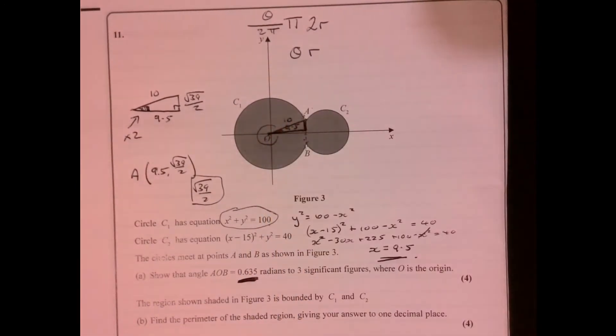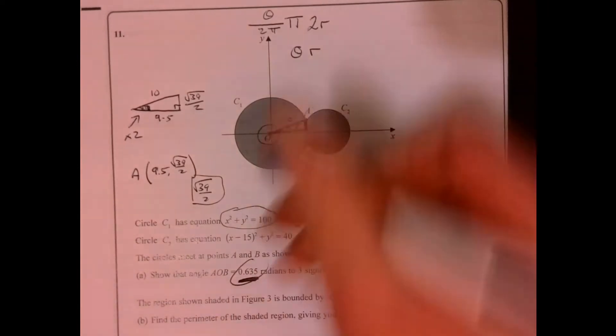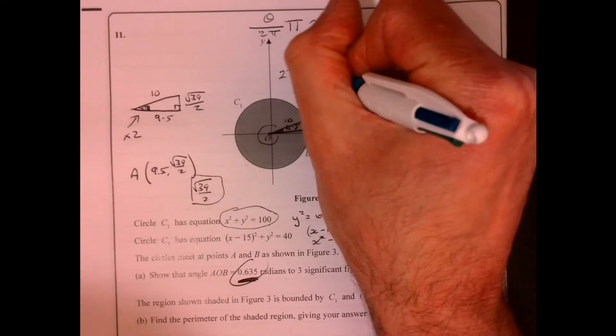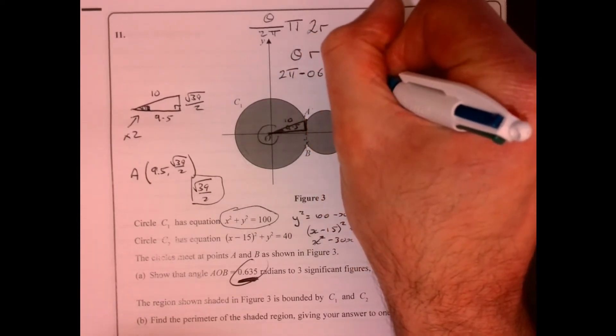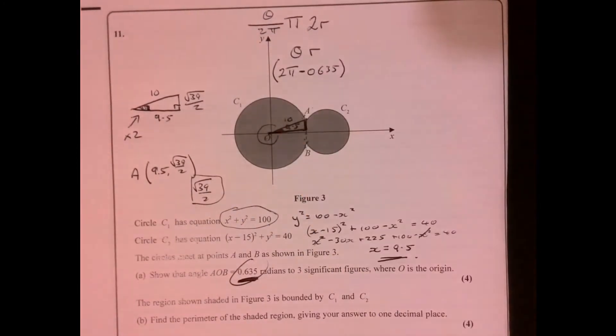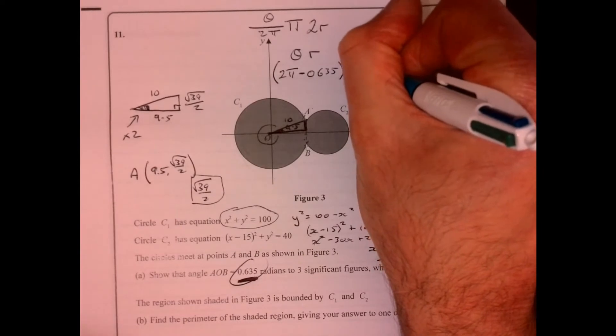Okay, so the hard bit here is then saying what that is, and that's 2 pi take away that figure just then, so 2 pi take away 0.635, and multiply by the radius of this one which is 10.